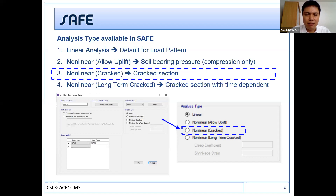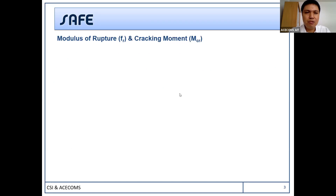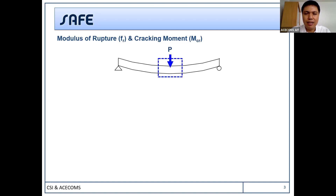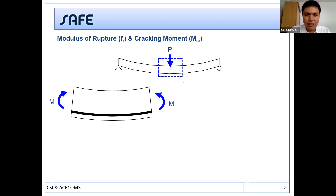First of all, I'm going to explain what a crack-section is. If anyone has a question during my presentation, they can interrupt me anytime. So we need to understand the modulus of rupture and cracking moment. Suppose you have a beam or slab, supported and loaded. When you cut a small section, maybe in the middle, it has a positive moment.